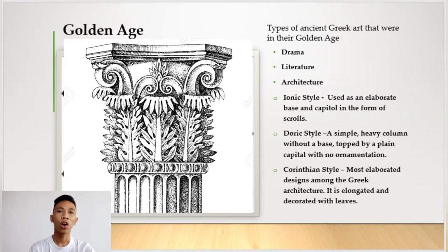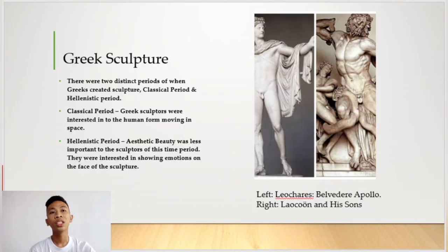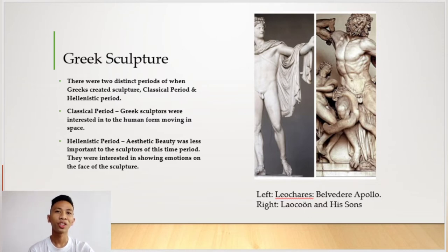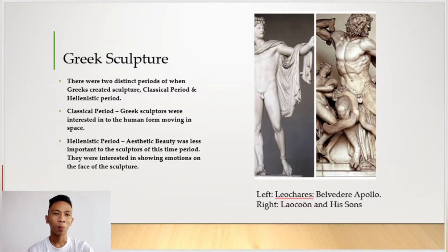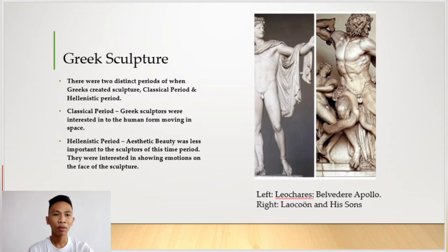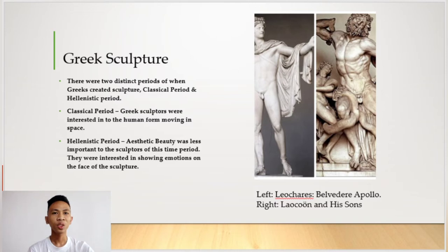Let's move on to Greek sculptures. There were two distinct periods in which the Greeks created sculptures: the Classical period and the Hellenistic period. In the Classical period, Greek sculptors were interested in the human form moving in space — the sculptures created depict human forms that look like they are moving.